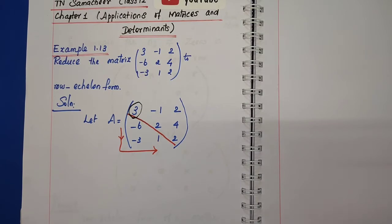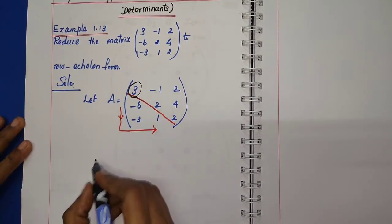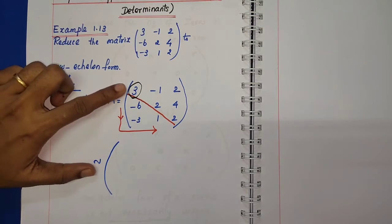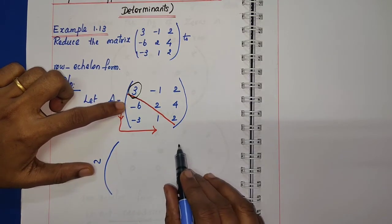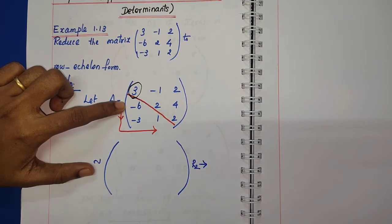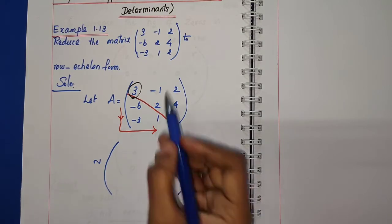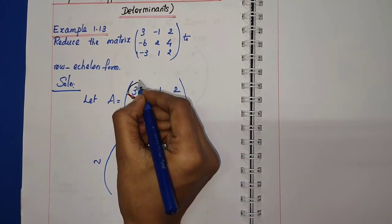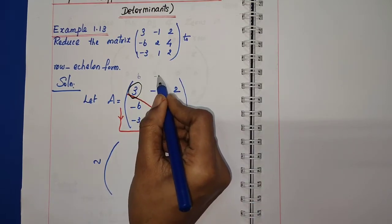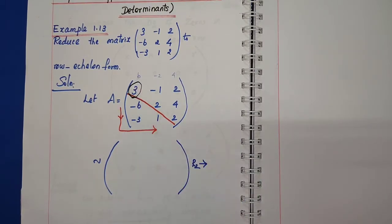In the order of 0, row echelon form is very easy. Using the equivalent symbol, now first row change in the order of R2. R2 implies...